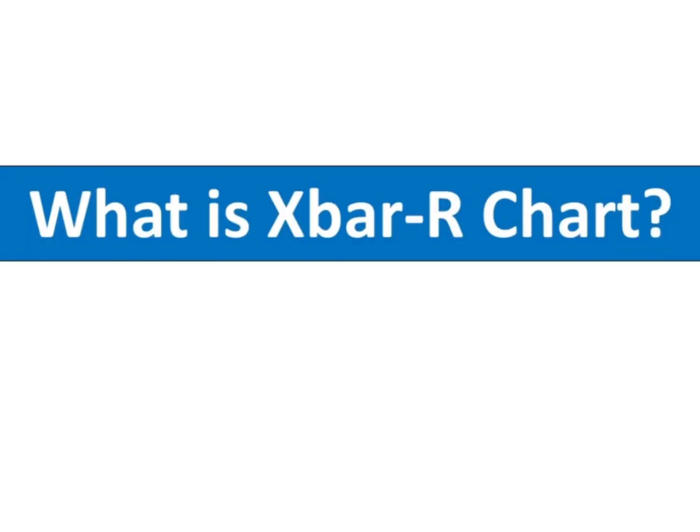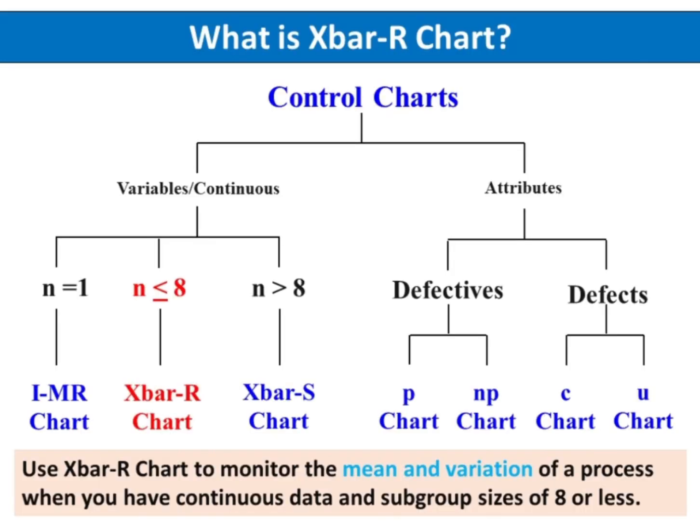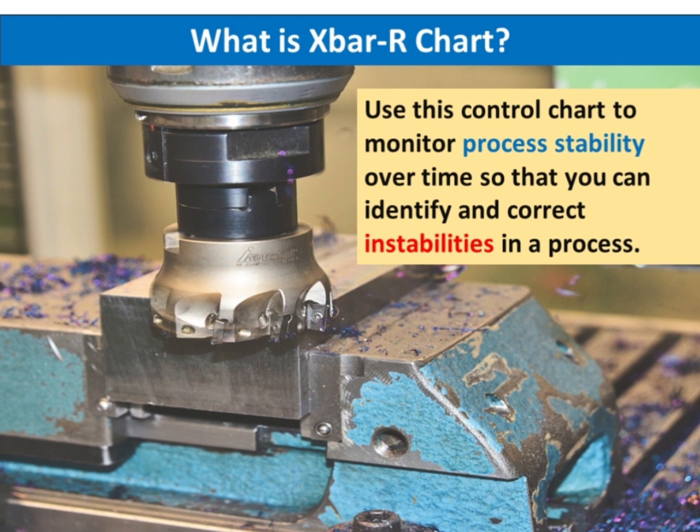Use X-bar R chart to monitor the mean and variation of a process when you have continuous data and subgroup sizes of 8 or less. Use this control chart to monitor process stability over time so that you can identify and correct instabilities in a process.